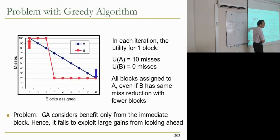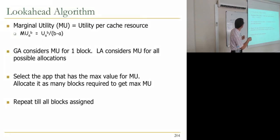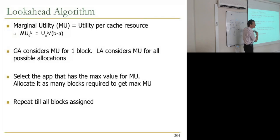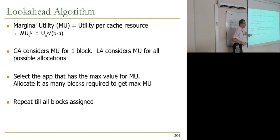That's not optimal partitioning — optimal should give ways to B first, then allocate to A. The look-ahead algorithm defines marginal utility as utility per cache resource — utility divided by the number of ways given to the application. The look-ahead algorithm considers marginal utility for all possible cache allocations, selects the application with maximum marginal utility, allocates as many blocks as required to achieve that maximum, and repeats until all blocks are assigned.